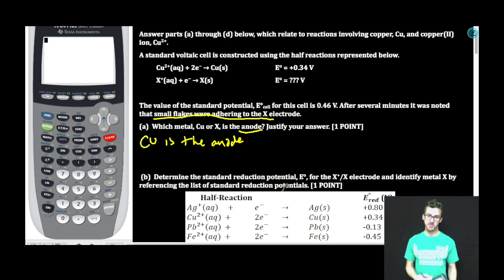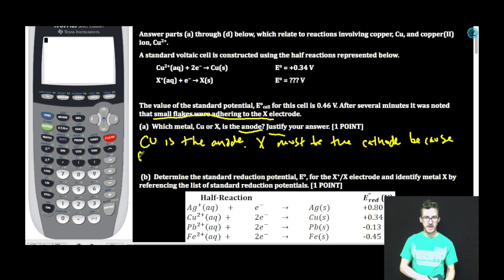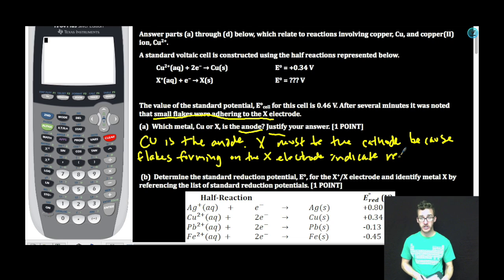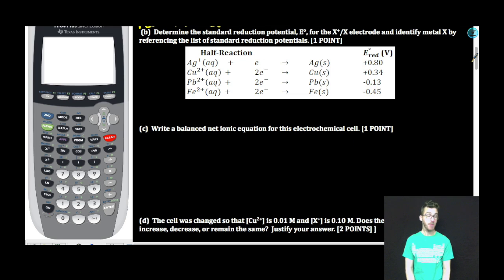Feeling great about myself, about to move on, before I realize that I'm not gonna get any points unless I justify my answer. X must be the cathode, because flakes forming on the X electrode indicate reduction. Reduction occurs at the cathode. One point. Part B.